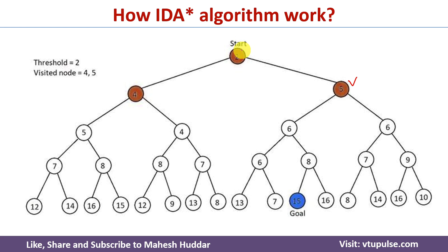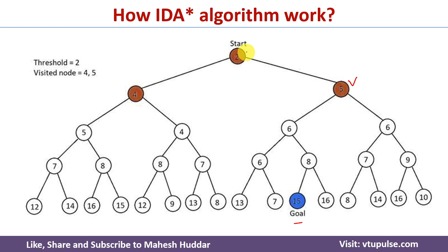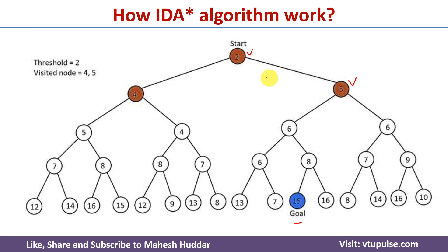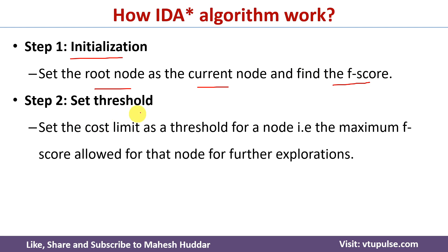Given this graph, we need to apply the IDA* algorithm and find a path from the start node to the goal node. The first step is initialization — we set the current node as the root node. We will also calculate the f-score. Here the f-score is already given in the graph, so there is no need to compute it. If it were not given, we would use the heuristic function to calculate it.